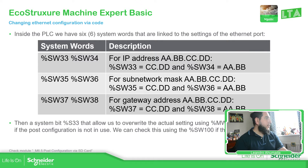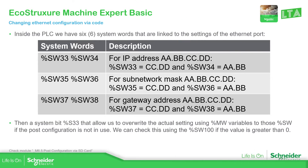In the PLC we have six system words. These two system words are related to the IP address. For each word you have 16 bits — 16 bits of our Ethernet IP address. We have two more for the subnet mask with the same organization, and one for the default gateway of our controller.